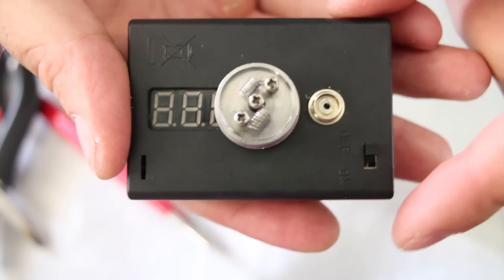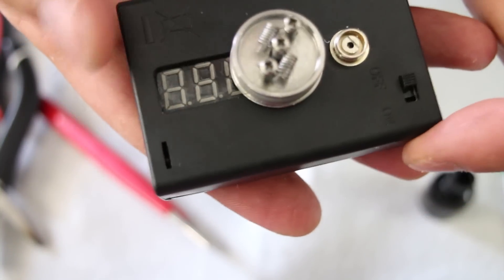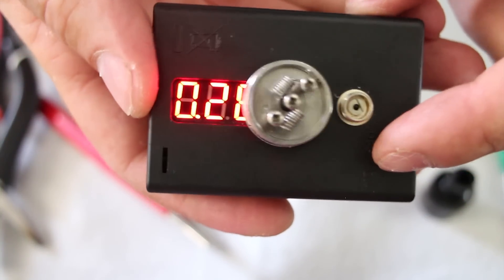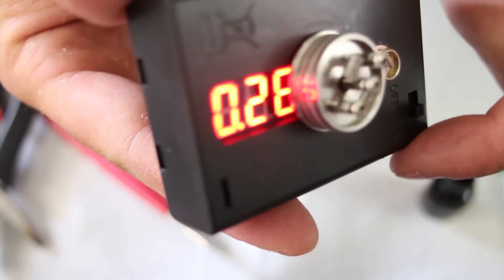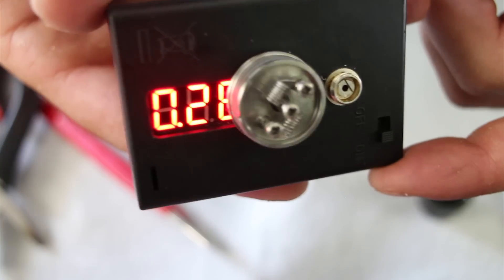Now we're going to take our tweezers and squish up our coil a little bit. So there you go. Let's give it a quick resistance check. 0.28, not bad.